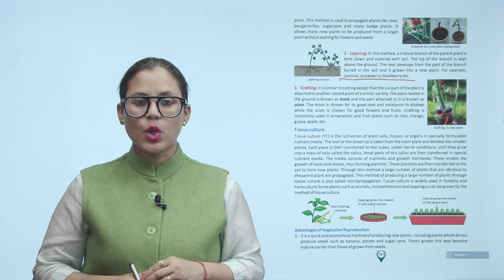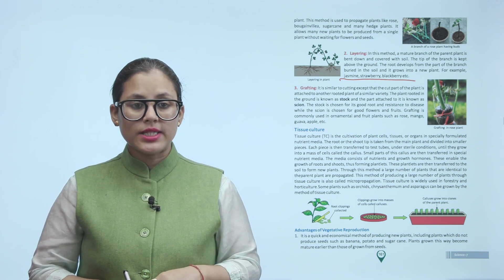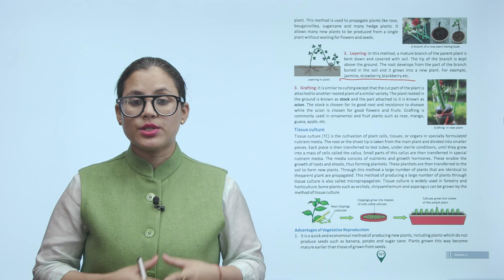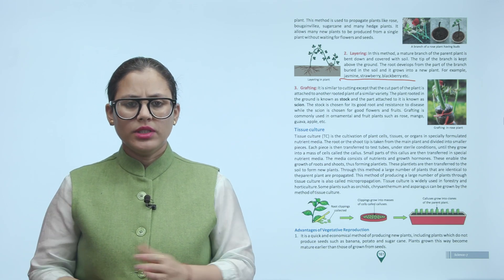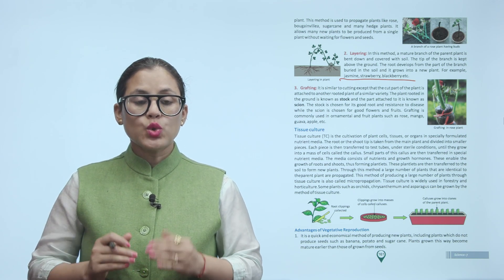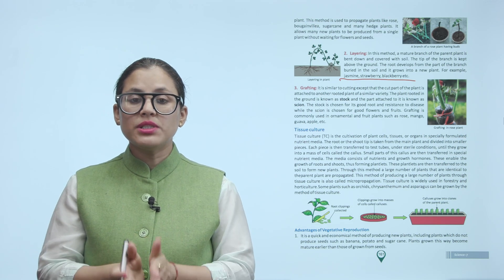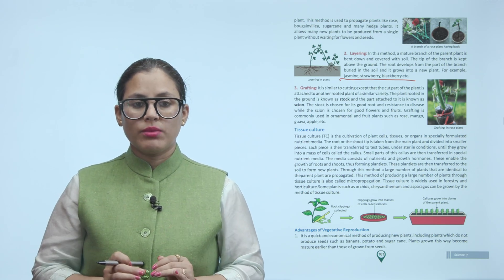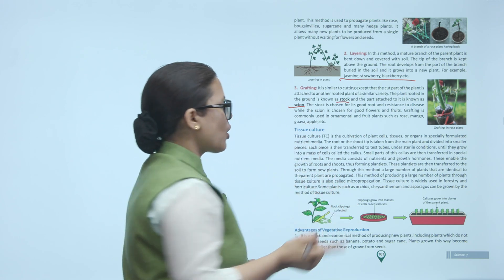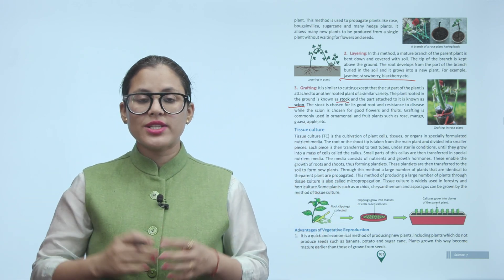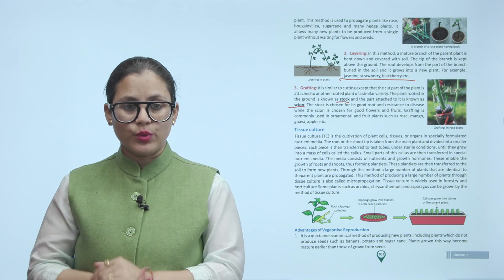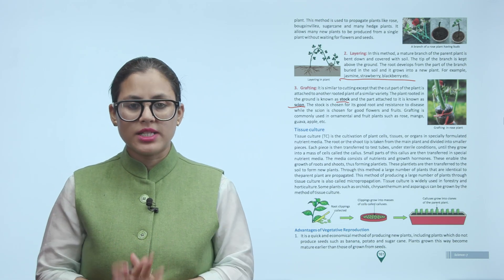Grafting: the plant rooted in the ground is known as the stock and the part attached to it is known as the scion. The stock is chosen for its good roots and resistance to disease, while the scion is chosen for good flowers and fruits. Grafting is commonly used in ornamental and fruit plants such as rose, mango, guava, and apple. In grafting, the cut part of one plant is attached to another rooted plant of a similar variety.